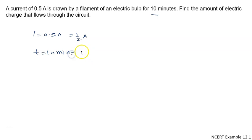In SI system, time is measured in seconds, so 10 into 60, because one minute equals 60 seconds, so it is 600 seconds. Find the amount of electric charge that flows through the circuit. We have to calculate the value of Q.